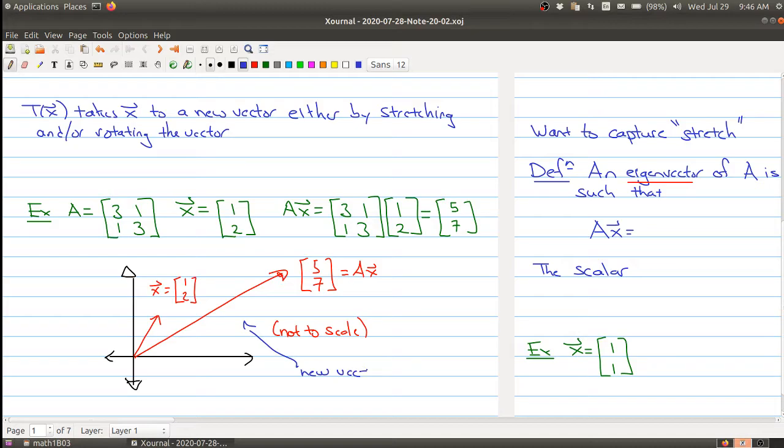And what we see is we can think about your original vector x, and it gets mapped to this new vector, Ax. And what we've done is we've stretched the vector and we've rotated the vector. So the new vector is stretched. We made it longer. We could have made it shorter. And we rotated it. So it's now pointing in a new direction.